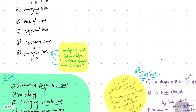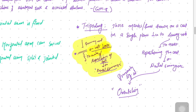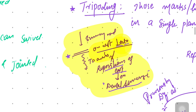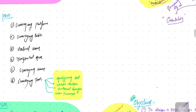Tripoding is defined as those marks or lines drawn on the cast in a single plane perpendicular to the surveying rod — lines marked to assist the repositioning of the cast on the dental surveyor. In short, it is lines drawn perpendicular to the surveying rod on the cast to assist the repositioning of the cast on the dental surveyor.